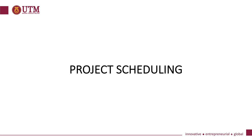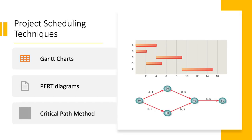We will now move to the project scheduling sub-topics to visualize our earlier planning. To document the project planning effectively, we should have better visualization to represent the scheduling of the project in terms of the activities, human resources and estimated time.